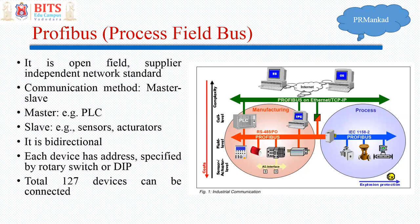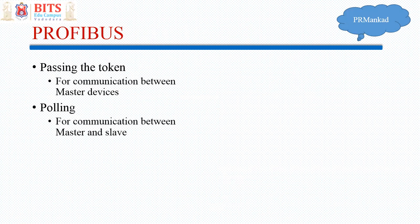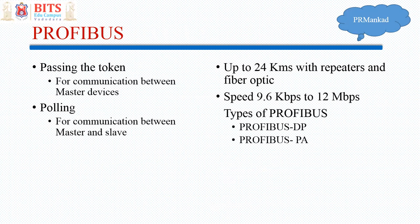Communication between masters takes place by token passing — a token is passed between masters, and whichever master holds the token and signals readiness sends the request, then the slave responds with data. Profibus features include coverage of up to 24 kilometers with repeaters and fiber optic. Speed varies from 9.6 kbps to 12 Mbps — shorter distances support higher data transfer speeds. There are two types: Profibus DP and Profibus PA.